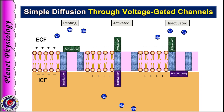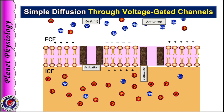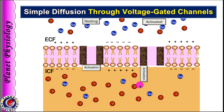Voltage gated potassium channels are also activated by the same voltage change that activated voltage gated sodium channels. On activation, these channels allow efflux of potassium, but these gates are slow to activate. So this is the essential information about voltage gated channels and their role in diffusion.